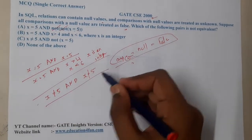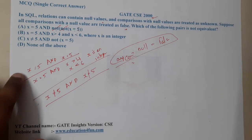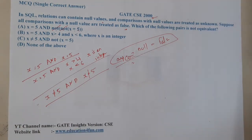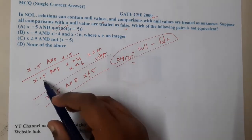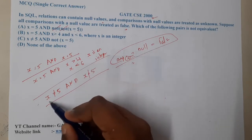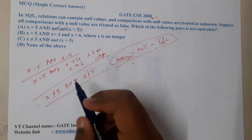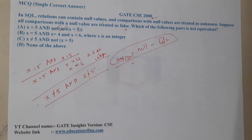If you observe all the options: Option A says x equal to 5 and x equal to 5. Option B says x equal to 5 and x is greater than 4 and x is less than 6. Option C says x is not equal to 5 and x is not equal to 5. Option D says none of the above.